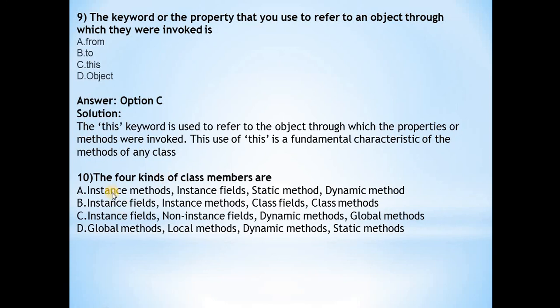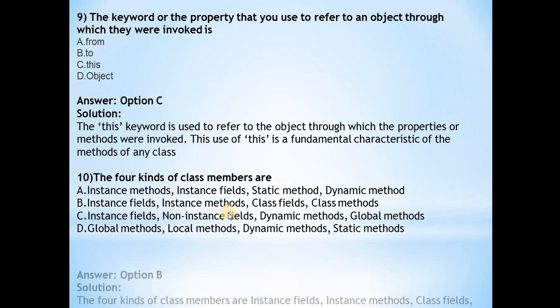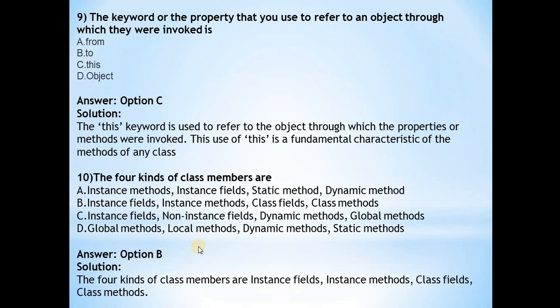The tenth question is: what are the four kinds of class members? The answer is B. The four kinds of class members are instance fields, instance methods, class fields, and class methods.